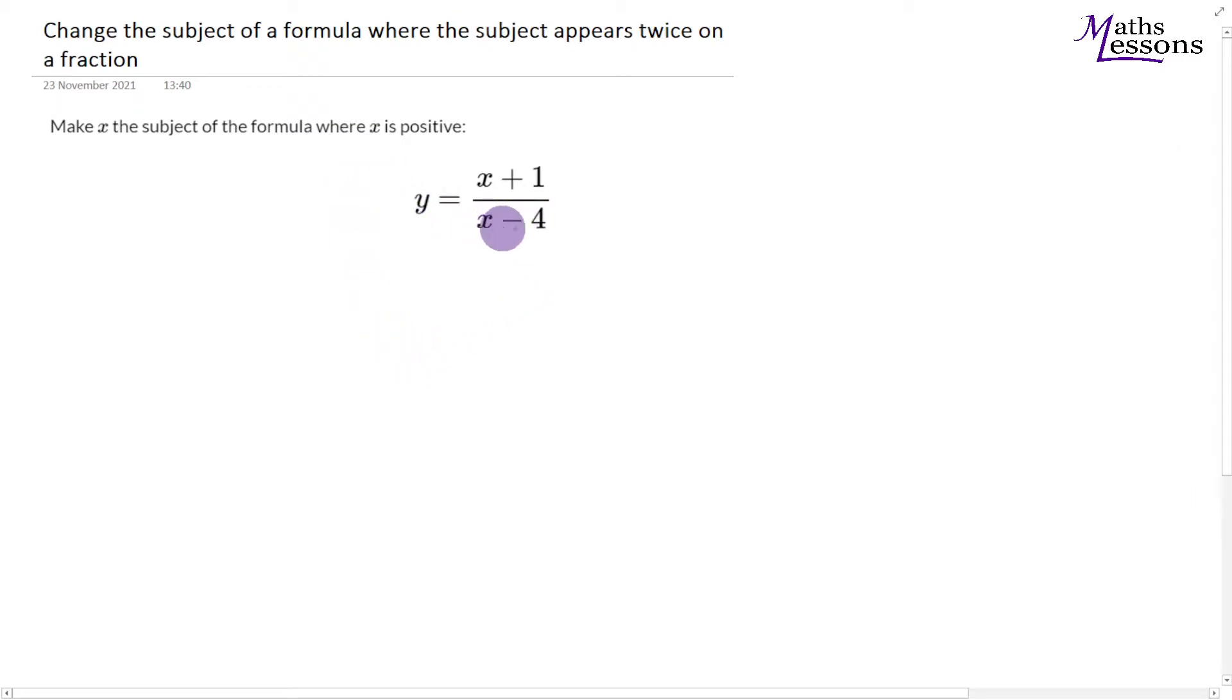We get rid of the fraction by multiplying by x minus 4. So we get y times x minus 4 on this side. If we multiply this side by x minus 4, this just cancels, leaving us with x plus 1 on this side.